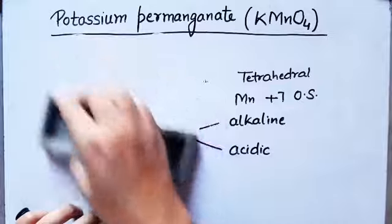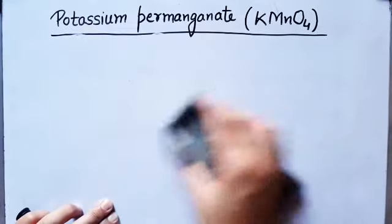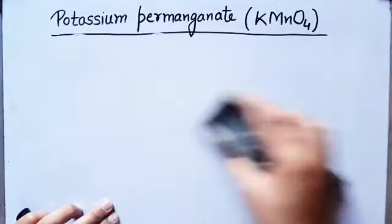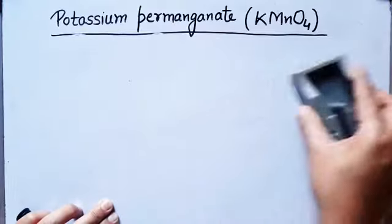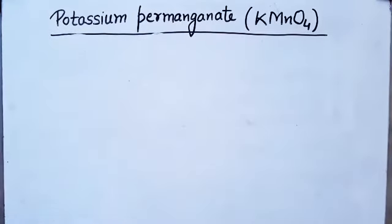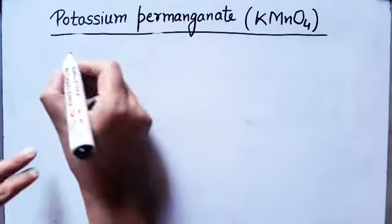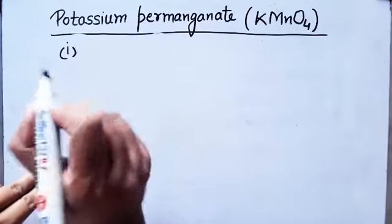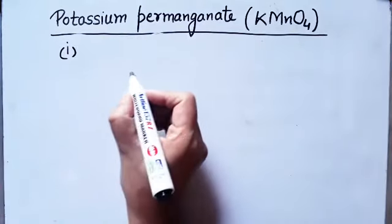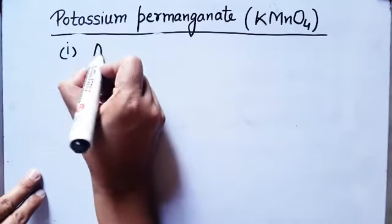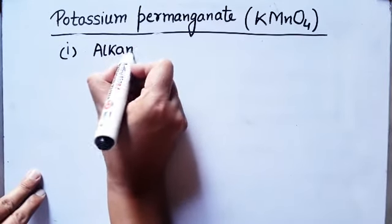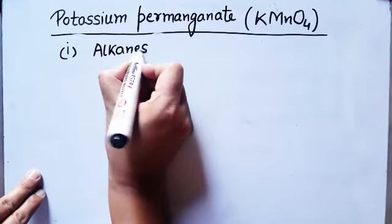We will take every organic compound — alkane, alkyne, alkene, aromatic hydrocarbon — and discuss each one by one. So first of all, we will discuss the action of KMnO₄ on alkanes.